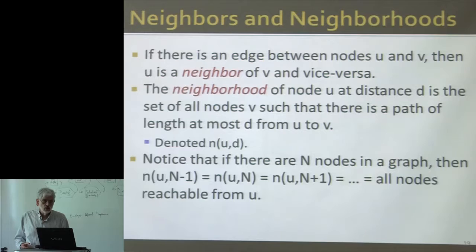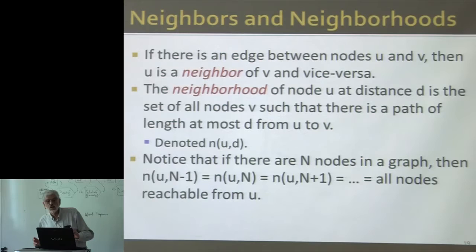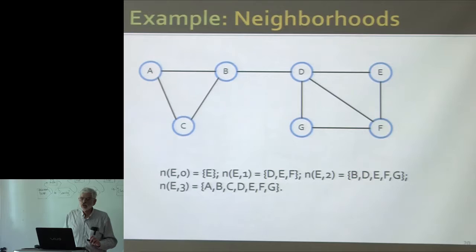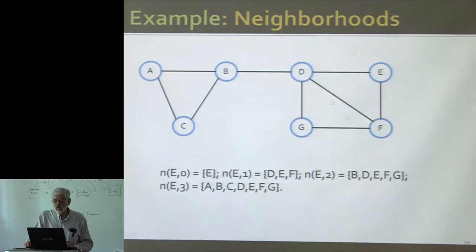It has to be a connected graph? No — N of U and capital N minus 1 will always be all the nodes reachable from U, which may be all the nodes if it's connected, or it may just be its connected component. But it's surely going to converge at some point. Here's the graph we were talking about: node E's neighborhood at distance 0 is just E itself, at distance 1 you get D and F, at distance 2 you get G and B, and by distance 3 you've got the entire graph.